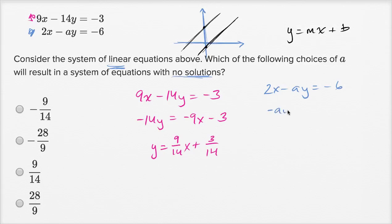I get negative ay is equal to negative 2x. I'm subtracting 2x from both sides, so I get minus 2x minus six. And then I can divide both sides by negative a.